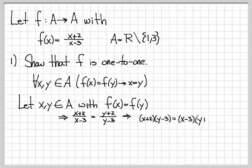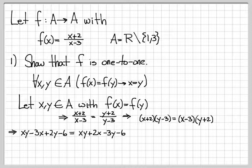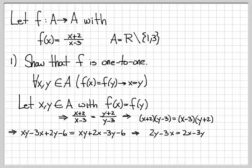Multiplying both sides by (y - 3), then expanding, on the left side we get xy - 3x + 2y - 6, and on the right side we get xy + 2x - 3y - 6. We have xy on both sides and -6 on both sides, so we subtract xy and add 6 to both sides. That results in 2y - 3x = 2x - 3y.